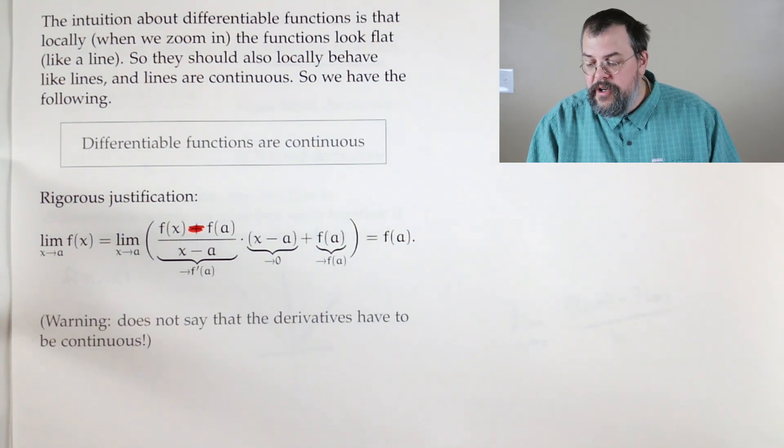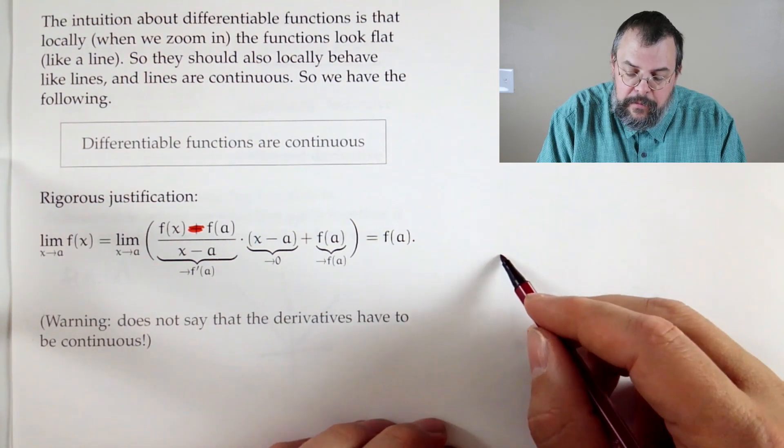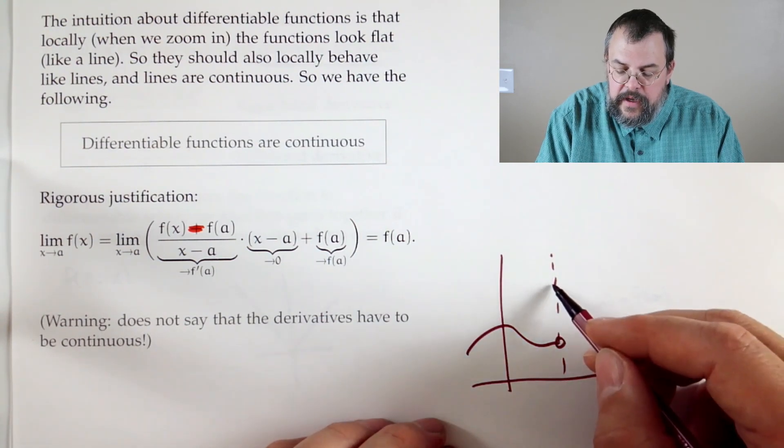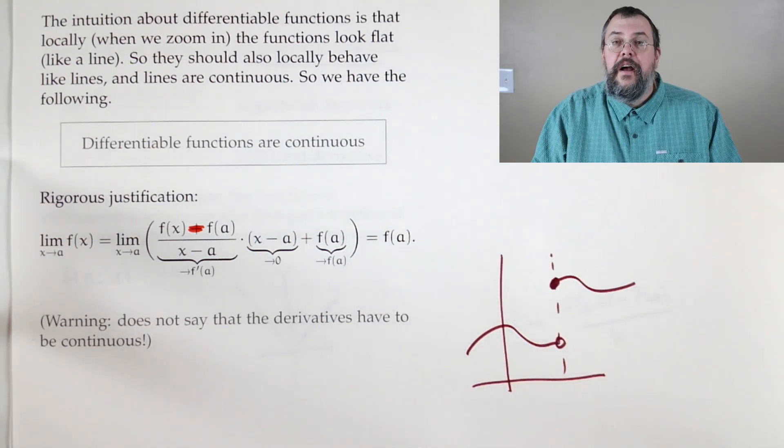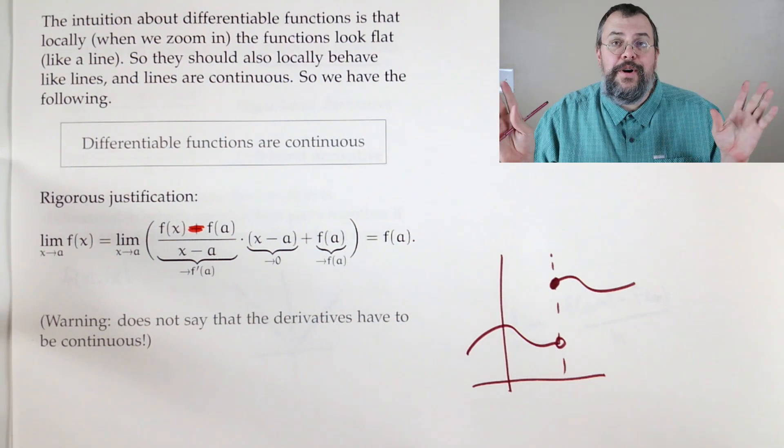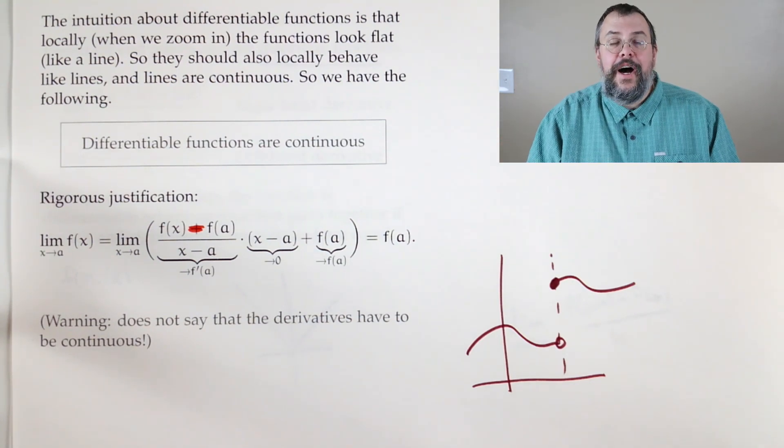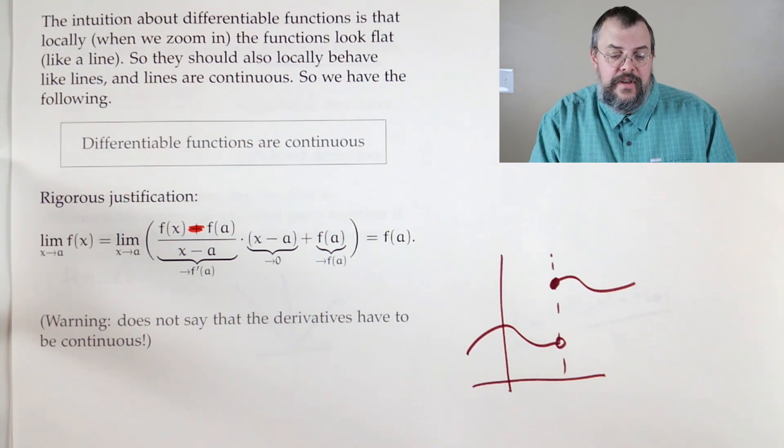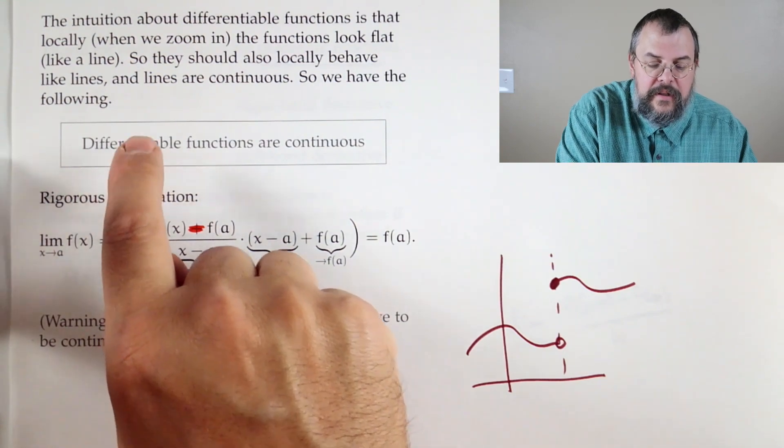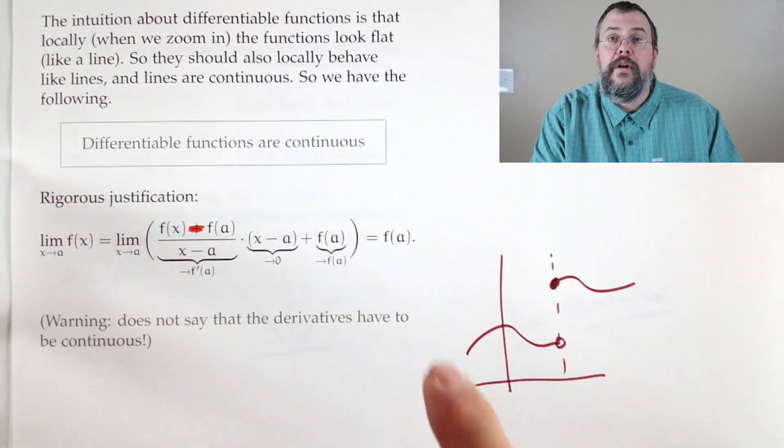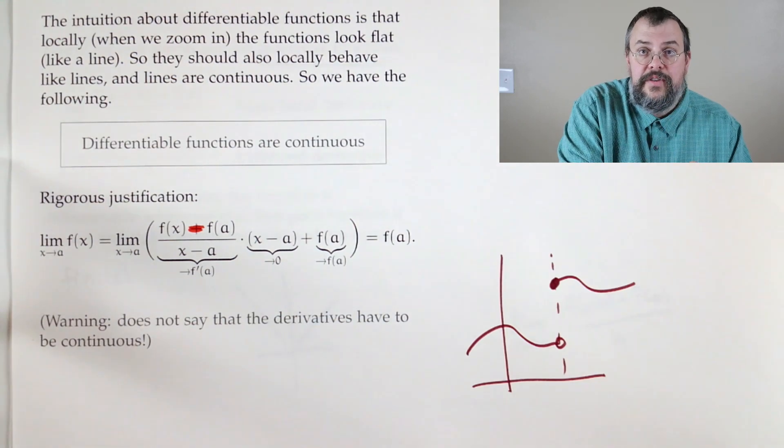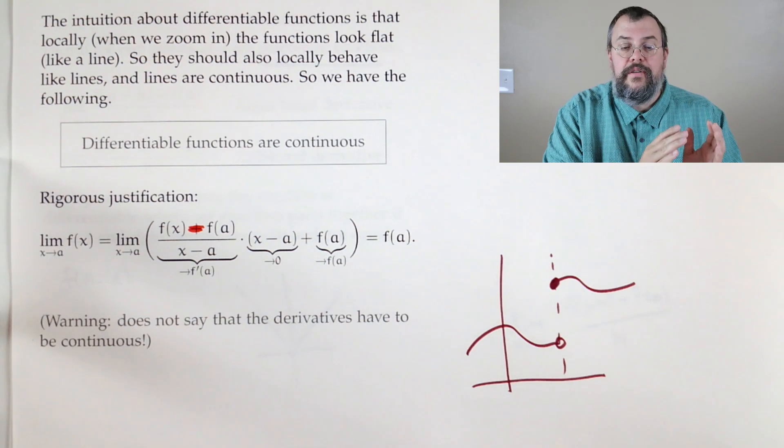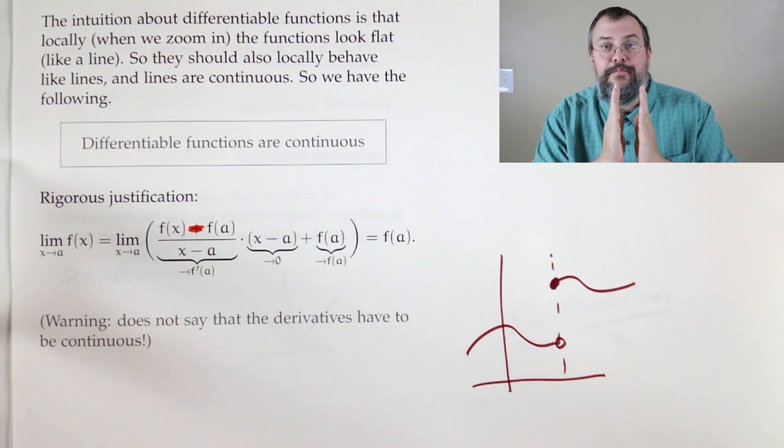All right. So in particular, what does this say? Well, it says things like this. If I have a function, which might be doing something like this. Boom. I know with zero work, that can't be differentiable. 100% guaranteed that's not differentiable. Because it's not continuous. You see, it says, if you're differentiable, then you're continuous. So it also says, if you're not continuous, you're not differentiable. It goes both ways.